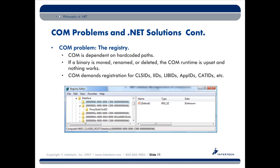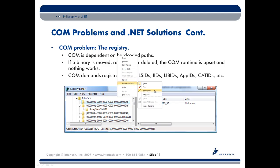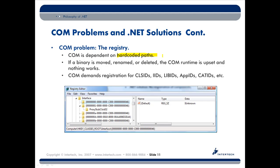Another big problem with COM was the registry. The registry itself is not a problem — every operating system has a centralized location where you can write out data. But the way COM used the registry was pretty tough. Essentially COM had a lot of hard-coded paths, like where a DLL was located on the machine, so it was very easy for an end user to accidentally move, delete, or rename something.